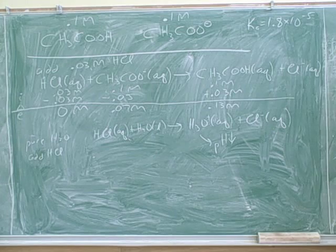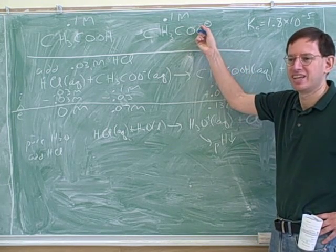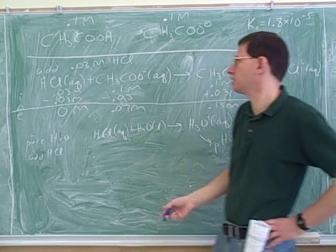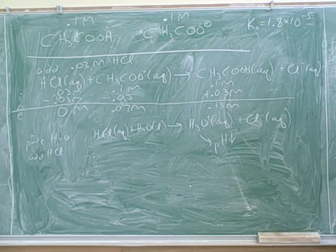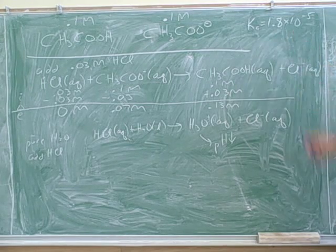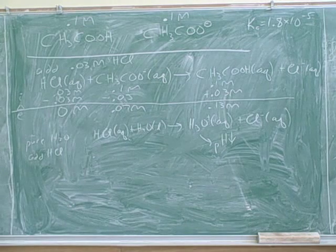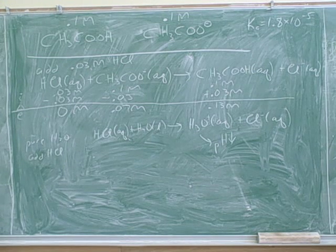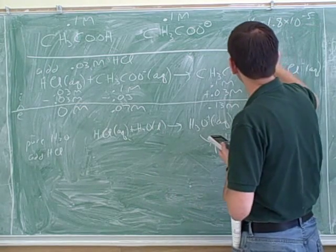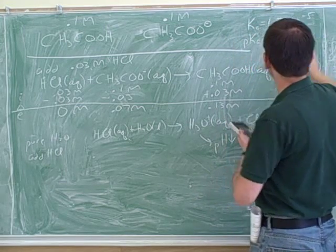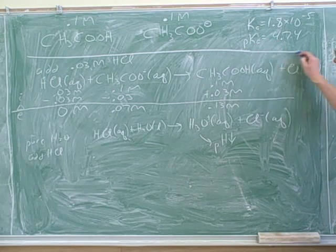It turns out there's a simpler method — this is when we use the Henderson-Hasselbalch equation. We have both the acid and the weak base present. What does the Henderson-Hasselbalch equation tell us here? That the pH equals the pKa. That's right — since the concentrations are equal, pH equals pKa, which is the negative log of Ka.